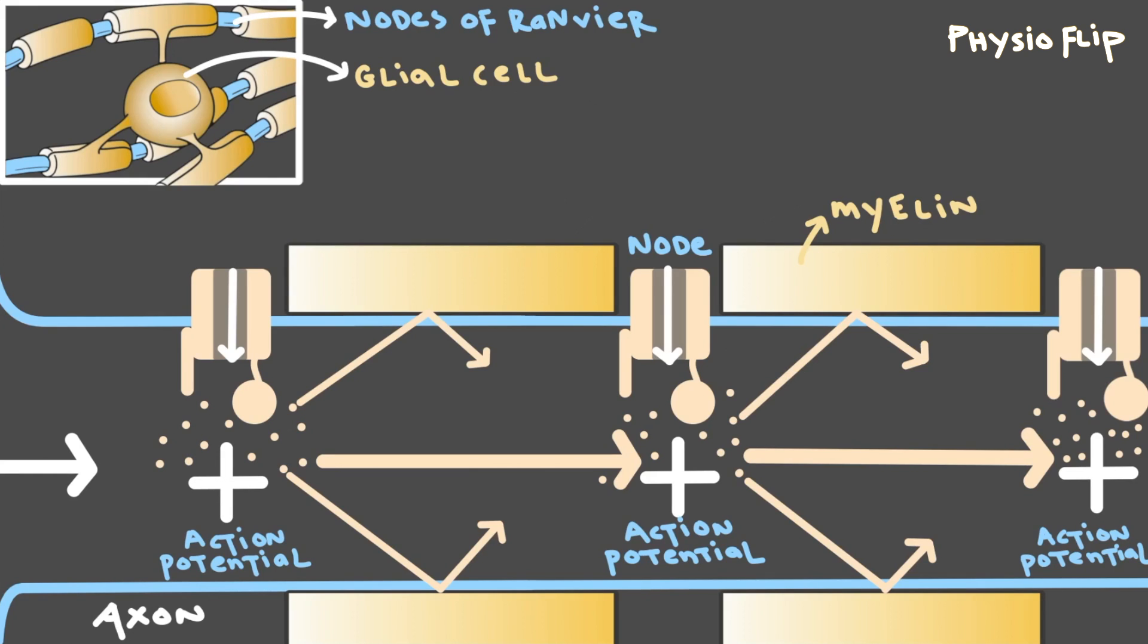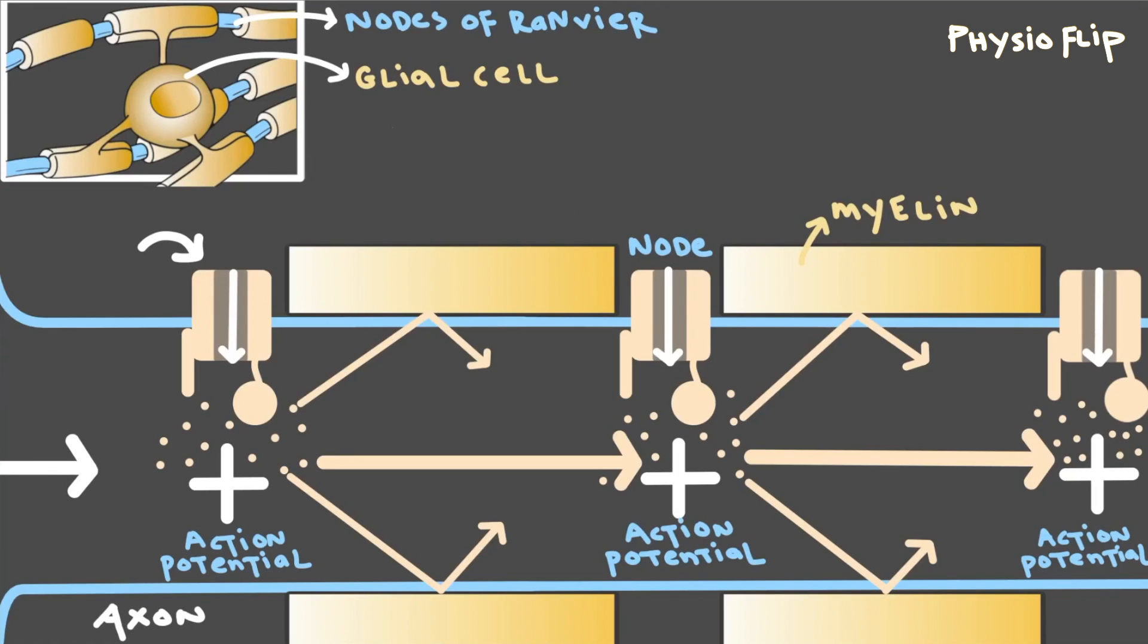So what you notice is that once we start an action potential at this first node in a neuron with myelin, we no longer have to generate an action potential at every single part of the axon. The action potentials seem to jump from node to node, skipping over the myelinated sections. And this process of action potentials jumping like this is known as saltatory conduction. Saltatory comes from a word meaning to jump or to skip, and that's exactly what these action potentials are doing. They are jumping from node to node, skipping over the myelinated portions.